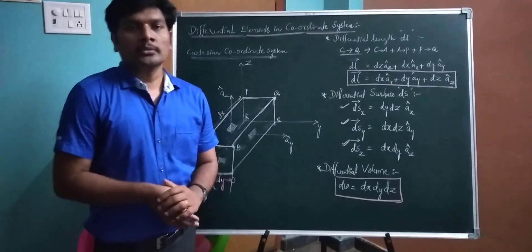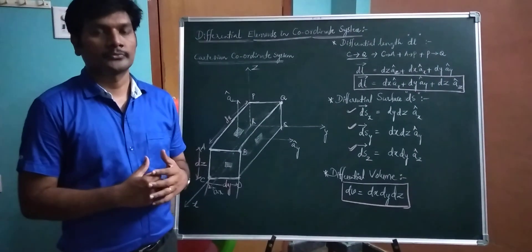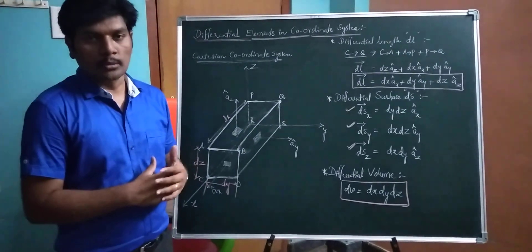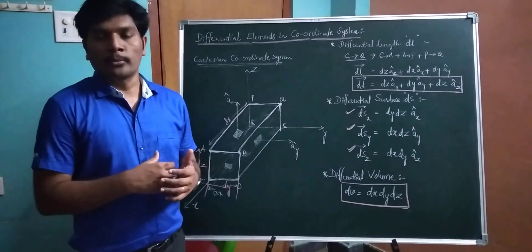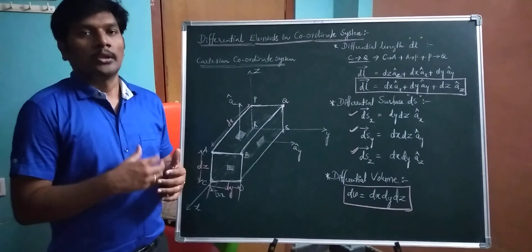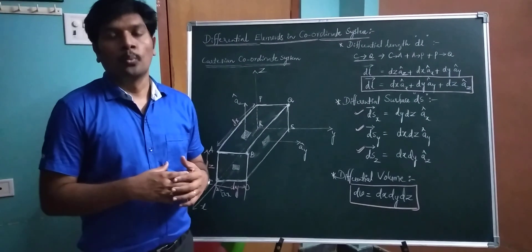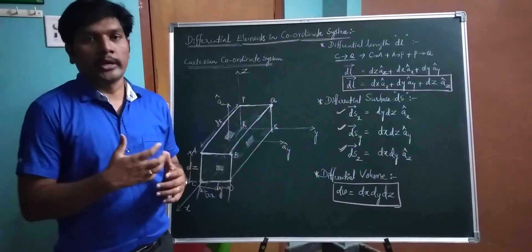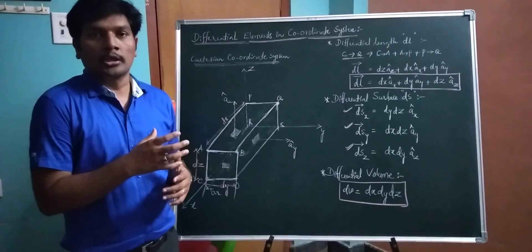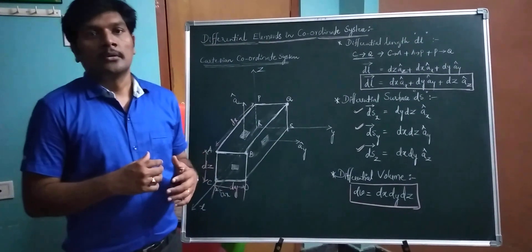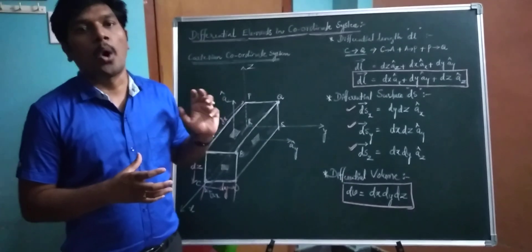In the previous videos we discussed the introduction to coordinate systems and the relation between coordinates. Here we will discuss differential elements in coordinate systems. In electromagnetic theory, we often use line integrals, surface integrals, and volume integrals. To evaluate these three integrals, we require differential elements, so we have to know the differential elements in three coordinate systems.